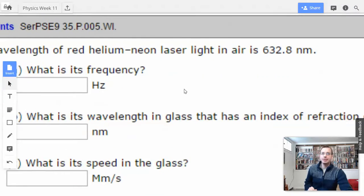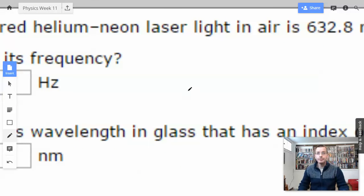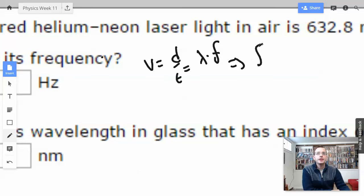What is the frequency? We totally got this. So we know that velocity equals distance over time, which equals wavelength times frequency. So frequency equals C over lambda.